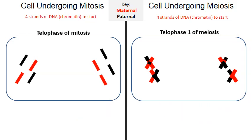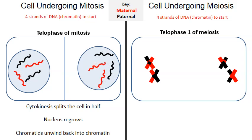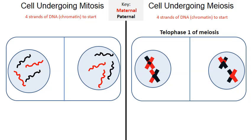Moving into telophase of mitosis on the left: cytokinesis begins — the cytoplasm splits the cell into two halves. As that happens the nucleus begins to regrow, and the chromatids begin to unwind back into their loose linear version of DNA known as chromatin. On the right-hand side, telophase one of meiosis: cytokinesis again begins to split the cytoplasm in half to create two cells, and sometimes the nucleus regrows, sometimes it doesn't. If we stop and evaluate the mitosis cell on the left, this is the end result — we've created two diploid cells. We're not finished with the meiosis cell on the right, so we'll continue that next.